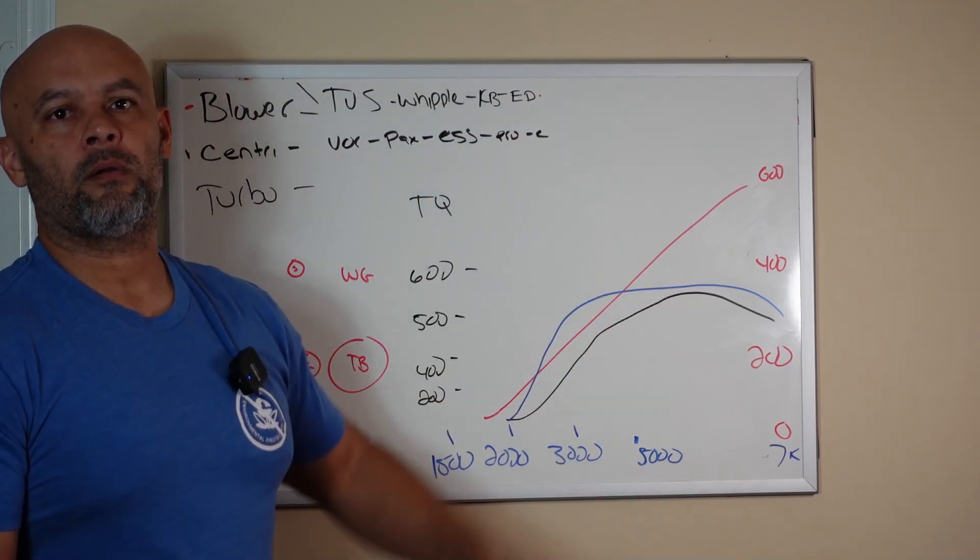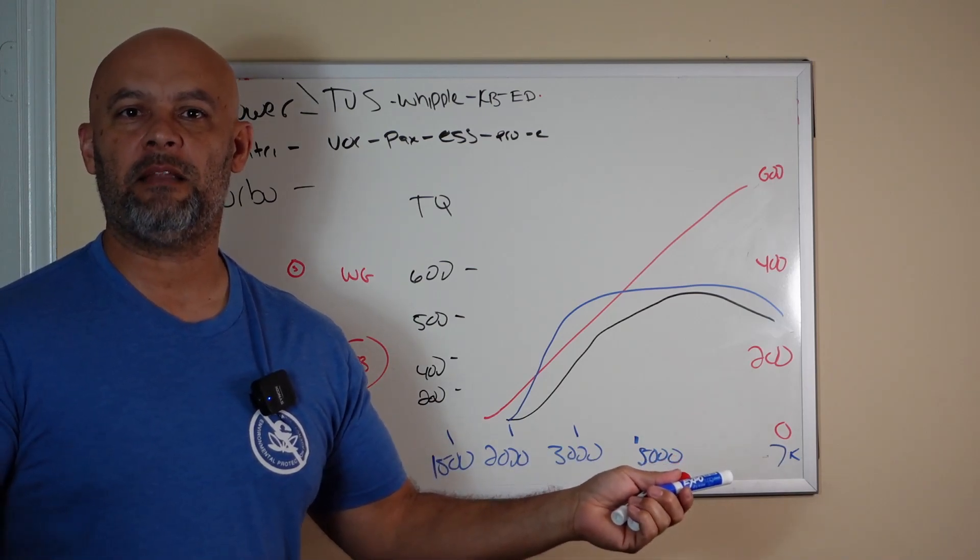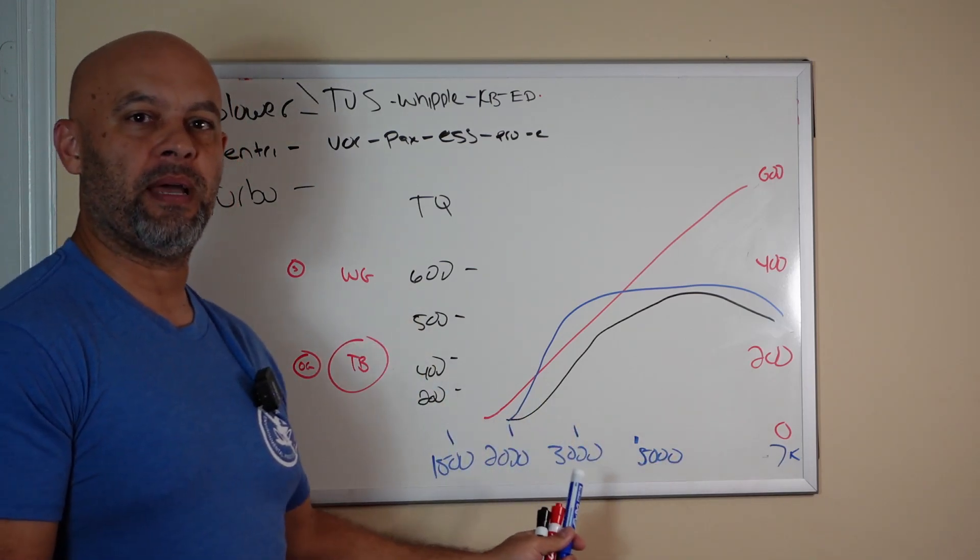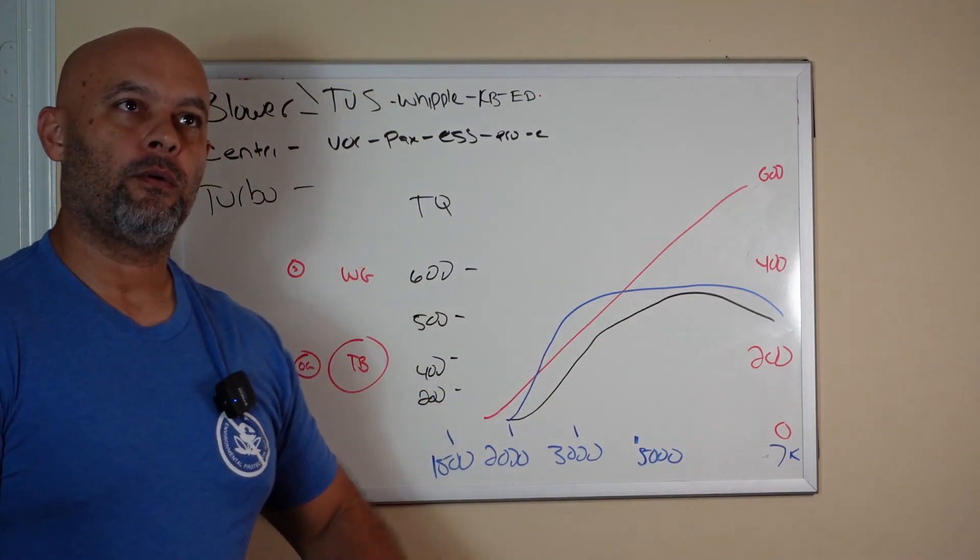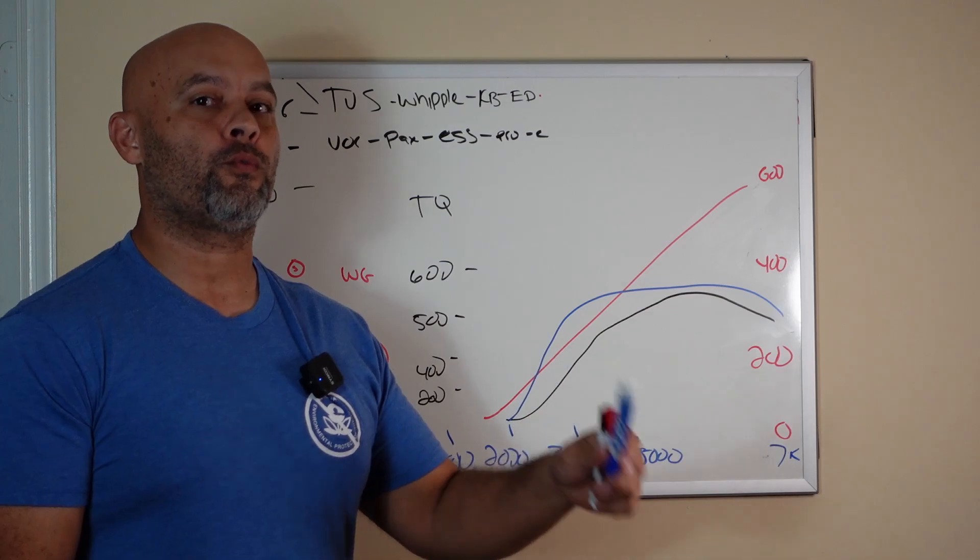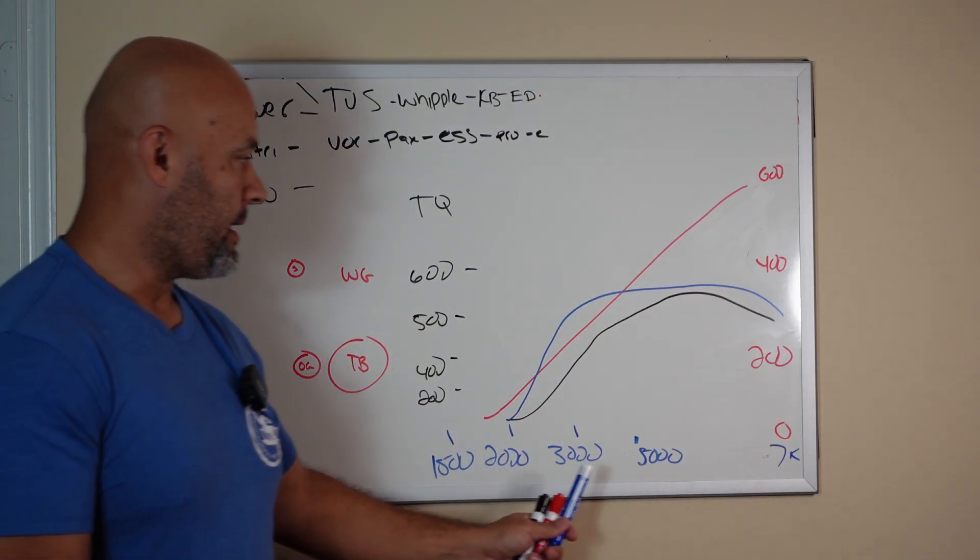VMP, Whipple, Kenny Bell, or Edelbrock, any of them at 10 PSI are going to feel 10 times better driving around than any centrifugal. Do you race? Do you roll race? Do you road race and do you live above 5000 RPMs? Yes.